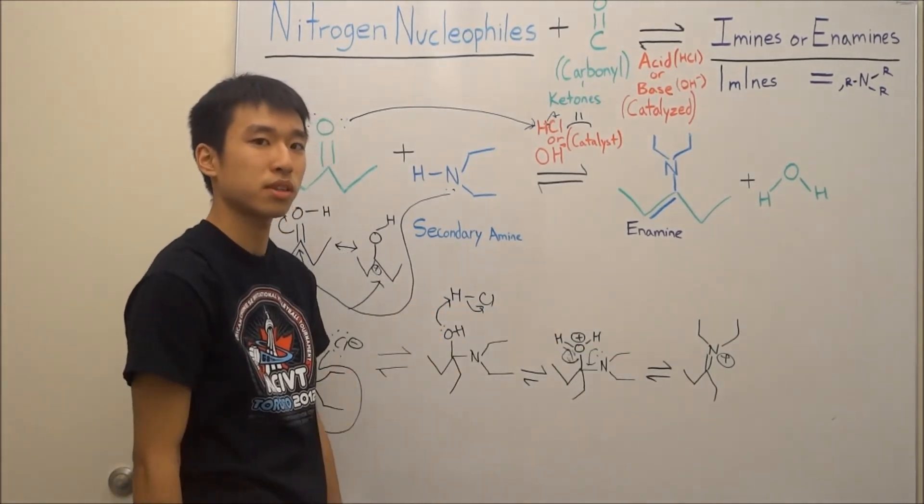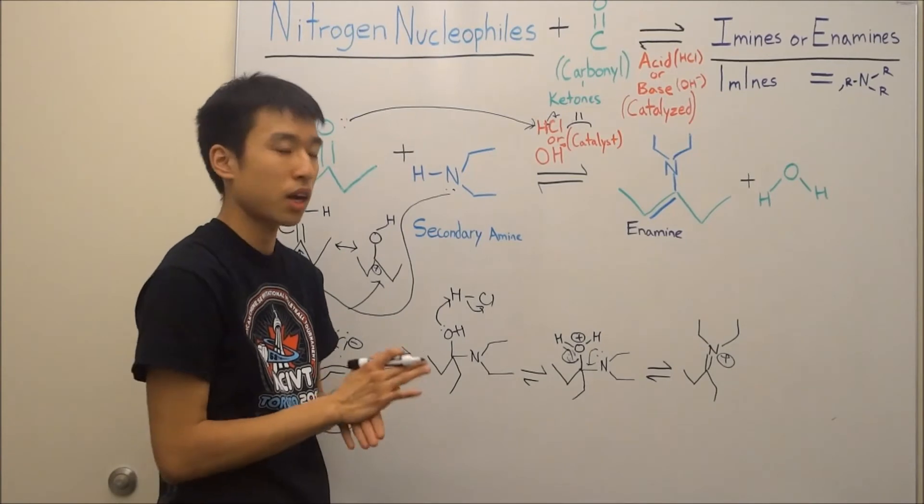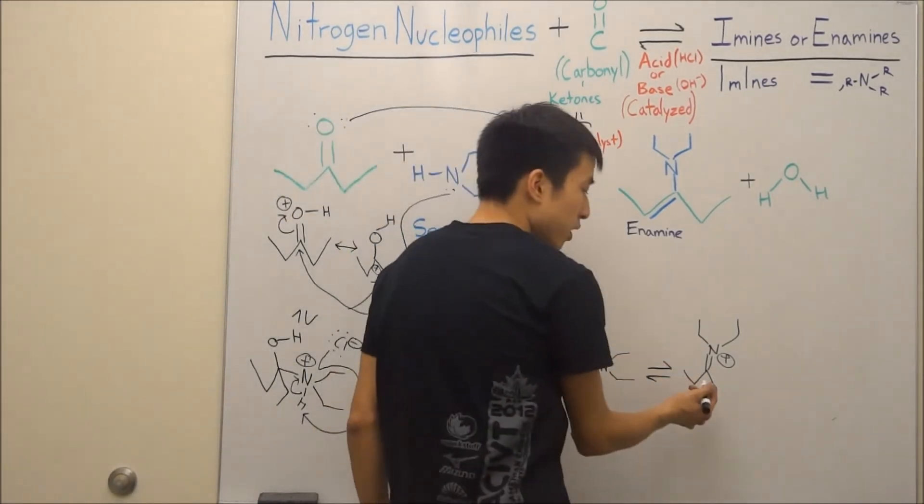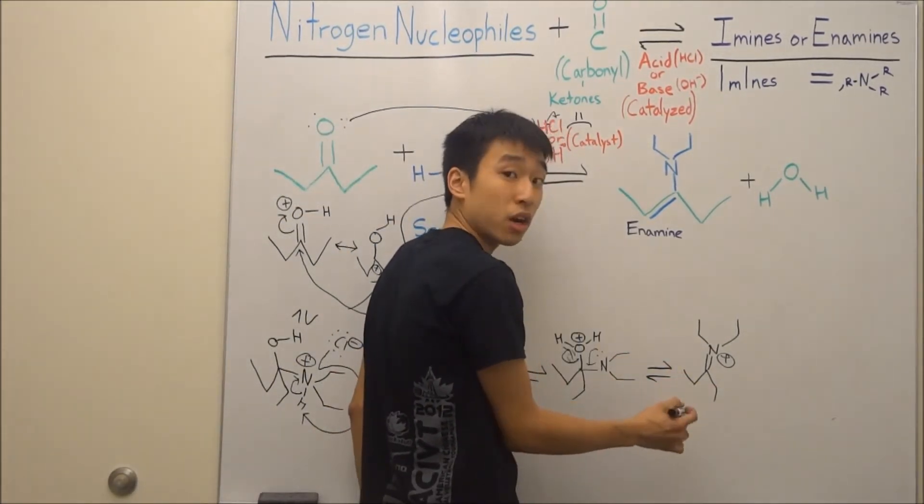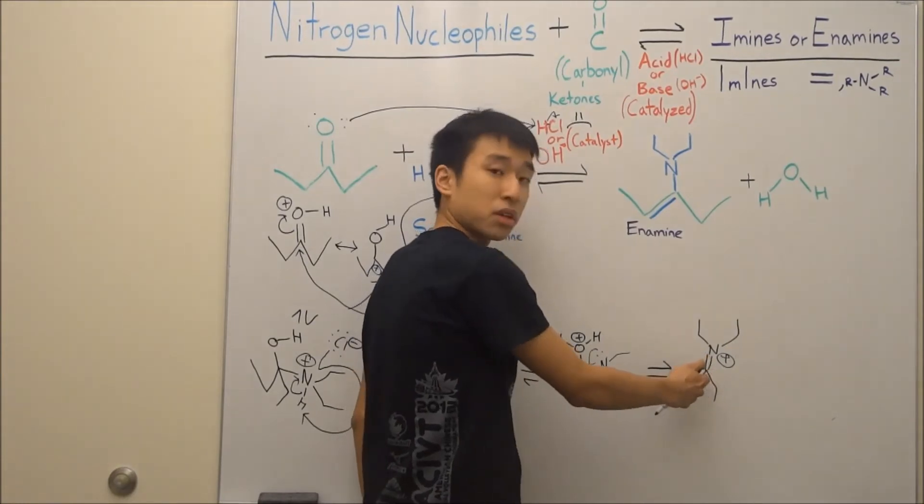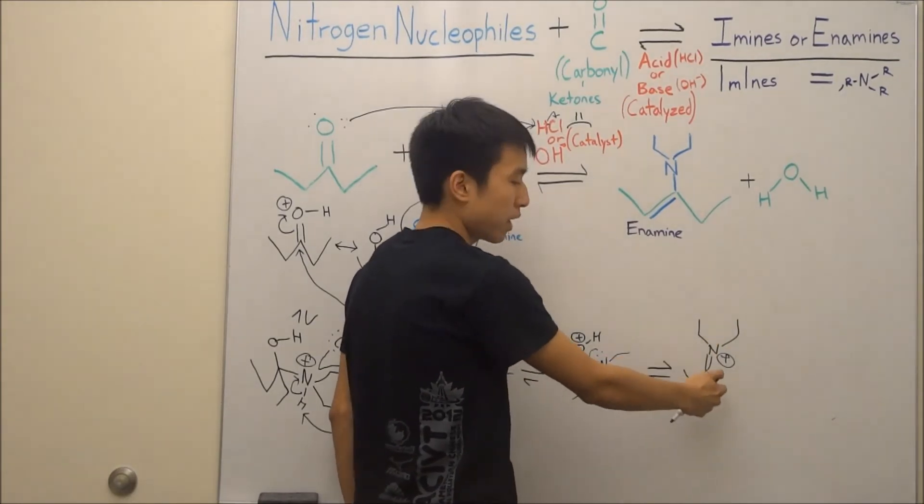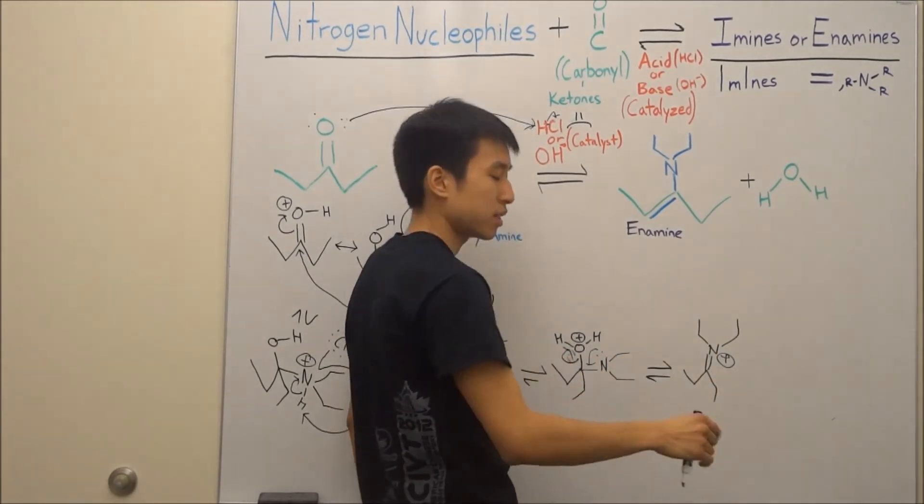So what we do is a simple E2 elimination reaction. So E2 is always involving a beta carbon. So this is the alpha carbon, because it's directly connected to the nitrogen. And the second carbon away is the beta carbon.